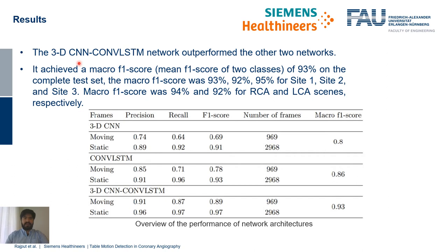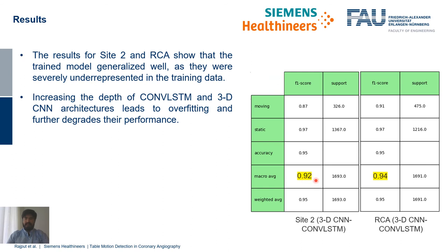The table here depicts the performance of all three networks. The 3D CNN + ConvLSTM Fusion Network outperformed the other two, achieving a macro F1 score of 93%. The 3D CNN network achieved only 80%, and the ConvLSTM network achieved 86%. Results for clinical site 2 and sequences showing the right coronary artery show that the Fusion Network generalized well, even though these were severely underrepresented in the training data, achieving similar F1 scores as on the complete test set. Increasing the depth of either the ConvLSTM or 3D CNN architecture led to overfitting and decreased performance.